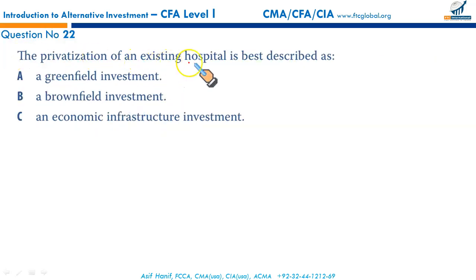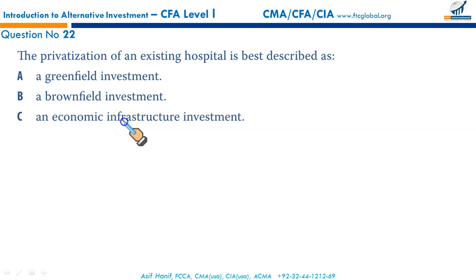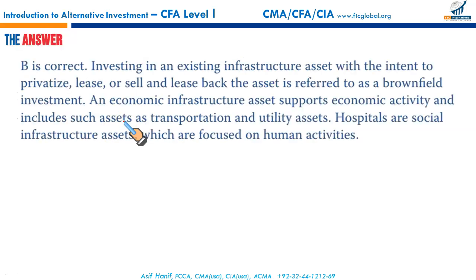The privatization of an existing hospital is best described as a brownfield investment. Investing in an existing infrastructure asset — whether to privatize, lease, or sell and lease back the asset — is known as brownfield investment. An economic infrastructure investment involves assets such as transportation, utilities, and so on. That makes B the correct option.